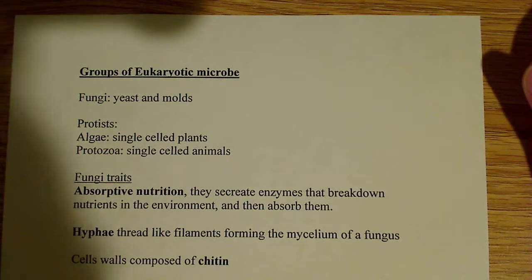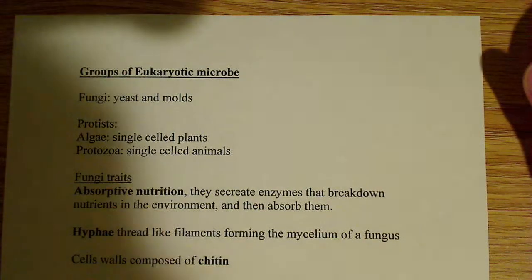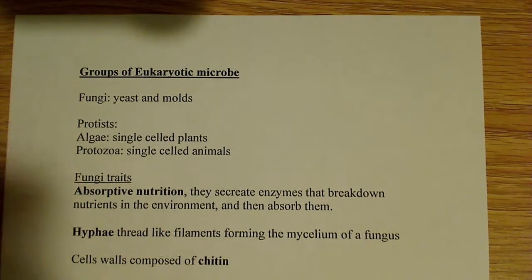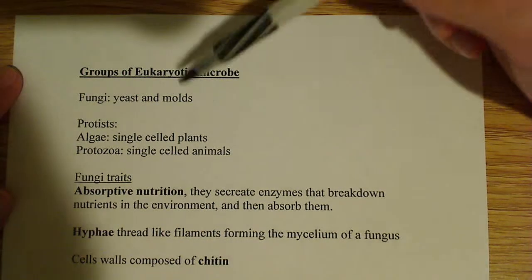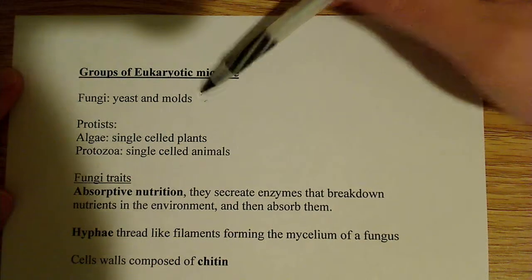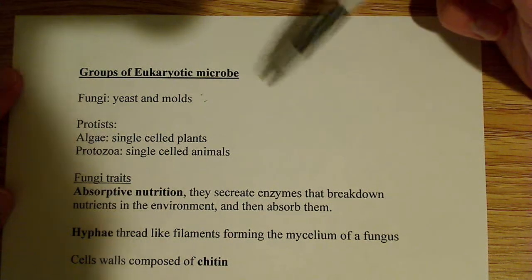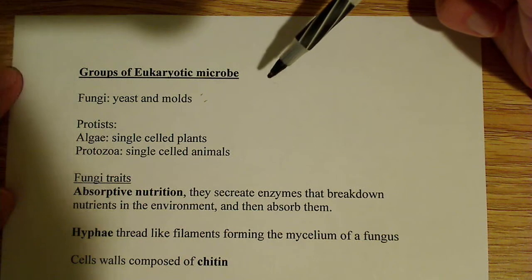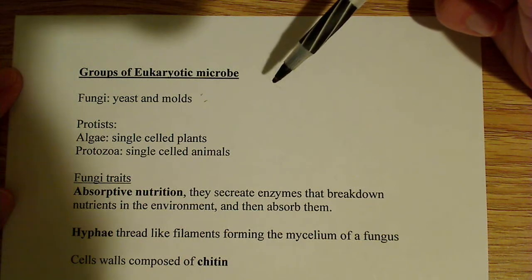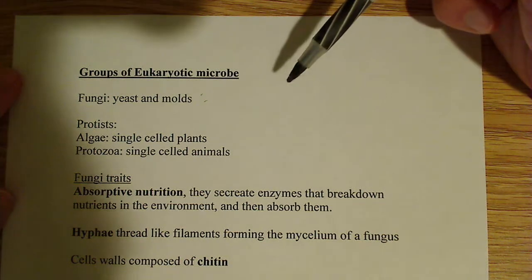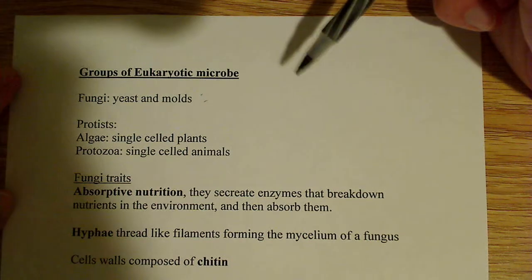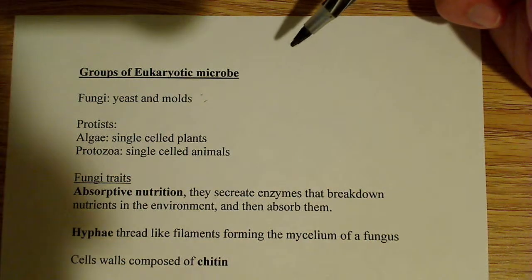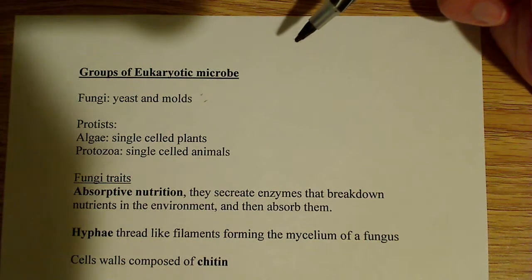In this video I want to introduce a couple of the eukaryotic microbes. The ones I want to talk about specifically are the fungi — yeast and molds are examples — and the protists. In the protists you have algae, which we can think of as single-celled plants, and protozoa, which we can think of as single-celled animals.